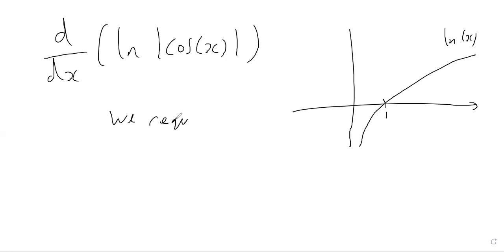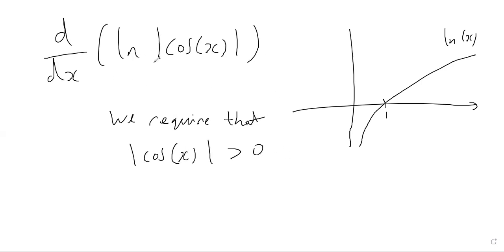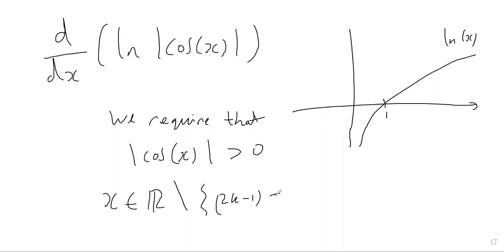We require that the modulus of cos of x is greater than zero in order for this natural logarithm function to be defined. The modulus of cos of x is greater than zero for real values of x apart from the odd multiples of π/2 — that is, (2k − 1) × π/2, where k is an integer.